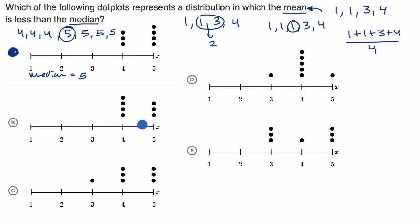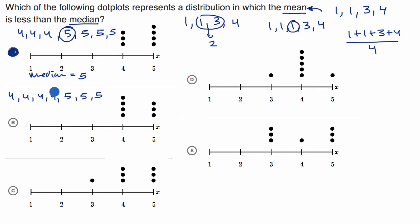Now let's look at the next choice. Here we have four fours and three fives: four, four, four, four, five, five, five. The middle number — the median — is four. The mean is again going to be between four and five, but closer to four this time. So this is a case where the mean is greater than the median. That's not what they're asking for — rule that one out.